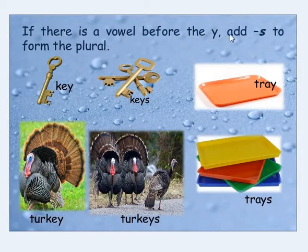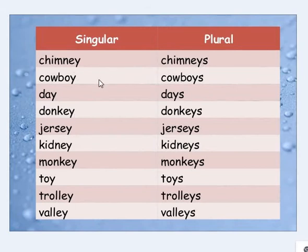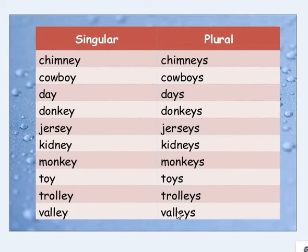If there is a vowel before y, just add -s to form the plural. For example: boy/boys, tray/trays, turkey/turkeys, chimney/chimneys, cowboy/cowboys, day/days, donkey/donkeys, jersey/jerseys, kidney/kidneys, monkey/monkeys, toy/toys, trolley/trolleys, valley/valleys. When there is a vowel sound before the y, we just add -s.